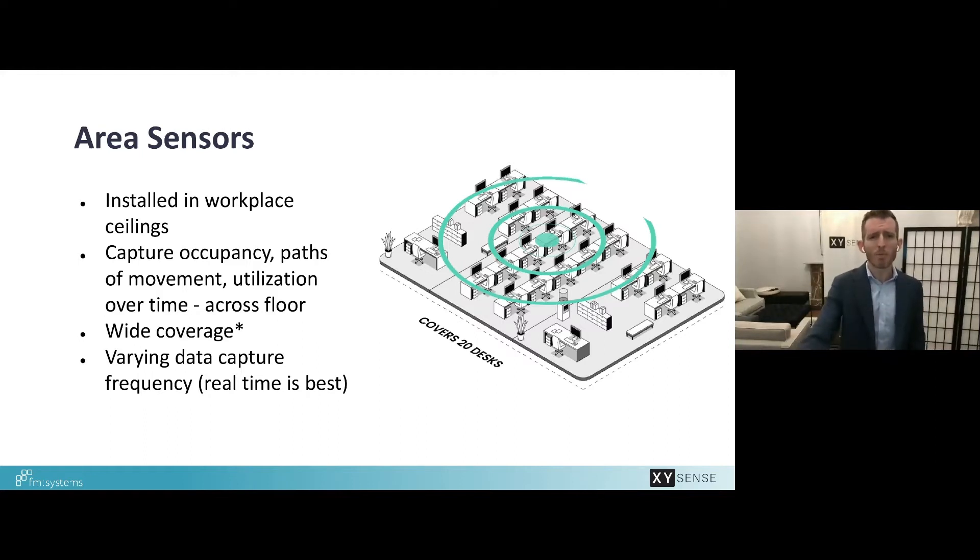Area sensors are typically able to understand and see people and pinpoint their location onto a floor plan. Most area sensors are anonymous without identifying who the activity of individuals are. They're able to recognize people across any different type of space whether it's breakout, kitchen areas, traditional work points or conference rooms.